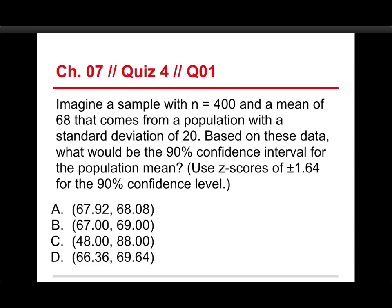The first question is: imagine a sample with an N or sample size of 400 and a mean of 68 that comes from a population with a standard deviation of 20. Based on these data, what would be the 90% confidence interval for the population mean? As a note, use a z-score of 1.64 for a 90% confidence interval. The answer is D, that the 90% confidence interval goes to a low end of 66.36 and a high end of 69.64.